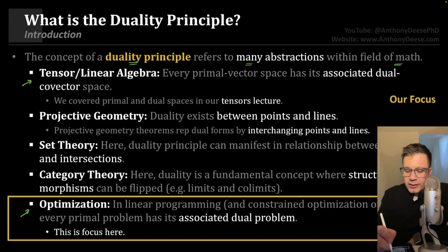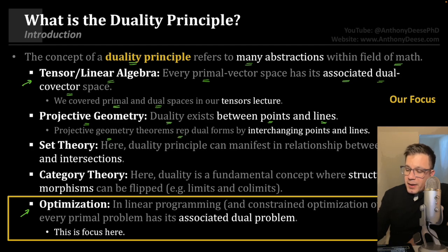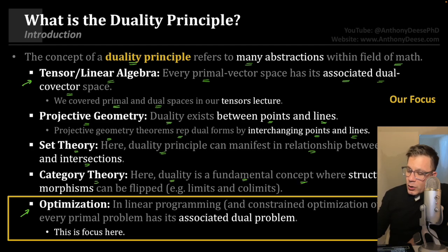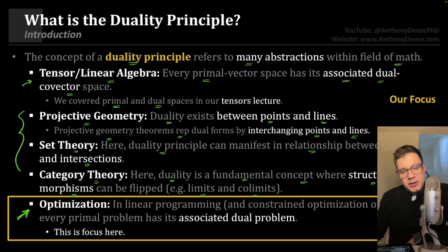One use is in the area of tensors or linear algebra, where every primal vector space has its associated dual co-vector space. We actually cover this in our series of modules on tensors — you can find that playlist on my YouTube page. Next is projective geometry, where a duality exists between points and lines. In set theory, a duality principle can manifest in the relationship between unions and intersections. And in category theory, duality is a fundamental concept where structures and morphisms can be flipped, for example, limits and their co-limits. This term duality refers to similar relationships reflected in many different areas, but let's get down to what we are interested in: the duality principle as it applies to optimization.